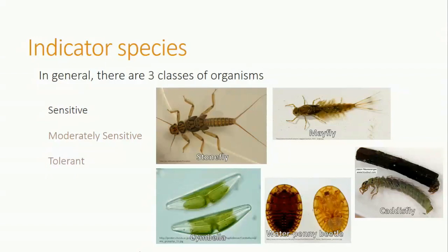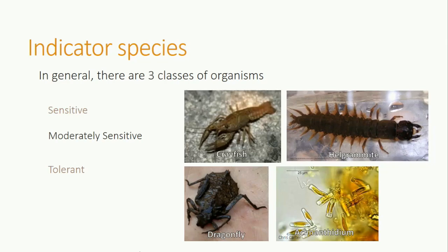Organisms have different tolerance levels. Focusing on macroinvertebrates and diatoms, which are a type of algae, we can identify their tolerance level into three general categories. Sensitive species include most mayflies, water pennies, stoneflies, some caddisflies, and Cymbella diatoms. These species tolerate the least amount of AMD before dying or moving out of the area if possible. Crayfish, dragonflies, hellgrammites, and Achnanthidium diatoms are considered moderately sensitive, meaning that they can tolerate more than sensitive species, but they still die or move out of areas that contain moderate or severe AMD contamination.